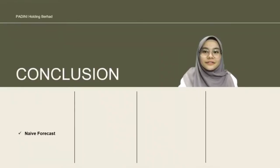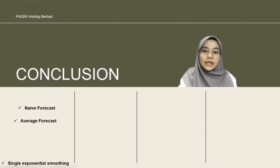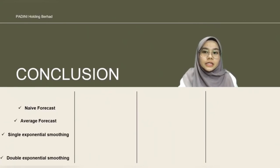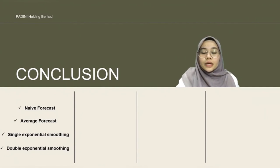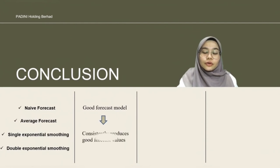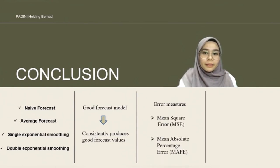Lastly, conclusion. Naive forecast, average forecast, single exponential smoothing, and double exponential smoothing are the four models that have been applied in this data. A good forecast model is one that consistently produces good forecast values. The error measures applied in this observation are mean square error MSE and mean absolute percentage error MAPE. After the four models have been applied, we are able to determine the most suitable mathematical model to fit the data series which is naive forecast with the lowest MSE and MAPE in the evaluation part.